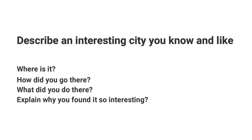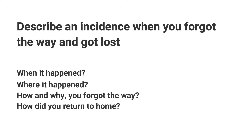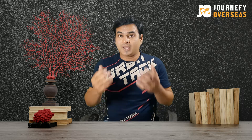Describe an interesting city you know and like — where is it, how did you go there, what did you do there, explain why you found it so interesting. Describe an incident when you forgot the way and got lost — when it happened, where it happened, how and why you forgot the way, how did you return home. These are some examples of common topics asked in IELTS speaking examination section 2.